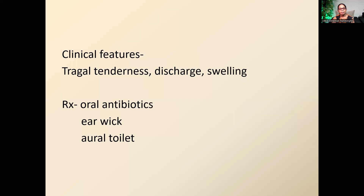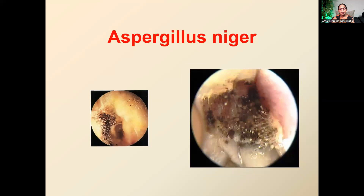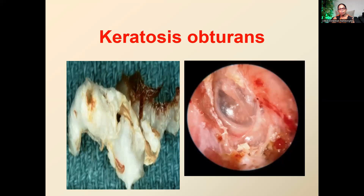Antibiotic eardrops can also be used, but when there is a lot of discharge in the canal, there's no point putting drops onto that discharge — you need to clean the ear first before prescribing eardrops. Fungal infections are seen — looking inside you can see fungal spores, white or black in colour with Aspergillus — especially common in the diabetic population. Keratosis obturans is a condition where impacted wax causes local pressure effects on the canal; it's a very painful condition requiring cleaning under anaesthesia.